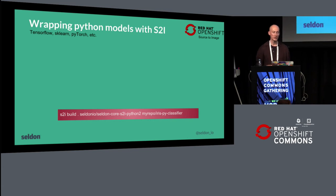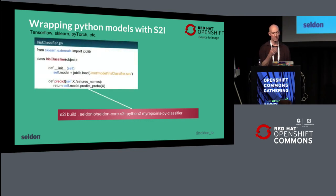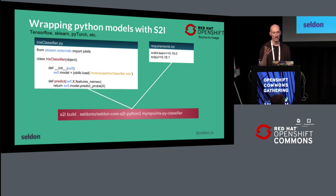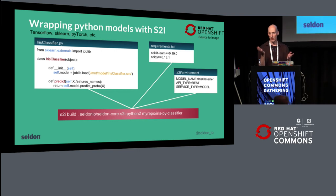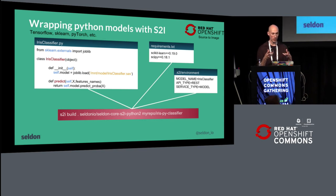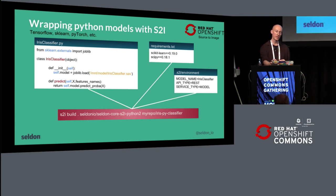Here's a quick example using S2I. It's going to do a build on the current directory — it could also be from GitHub — using our Python 2 builder image, and it's going to output a Python classifier. The first thing they need is their runtime component, here a standard random forest classifier in Python. They can then supply a requirements file listing what packages they need — Scikit-learn, SciPy, etc. They also provide environment configuration: what the class is called, how to expose the API (REST or gRPC), and what type it is — a model, or other types supporting A/B tests or ensemblers. Once you've done that, you just run the single line of S2I, which builds your runtime image, packages it, and then we can deploy it onto your cluster.